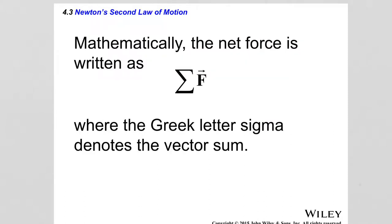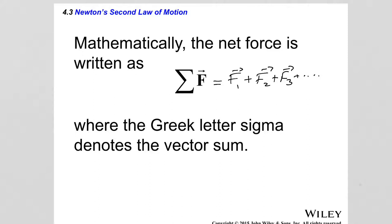The net force that acts on an object is the sum of all forces acting on it. Mathematically, the net force is written as the vector sum: F_net = F₁ + F₂ + F₃ + ... for however many forces act on the object. You add all these forces together as vectors, and that is the net force, also a vector.